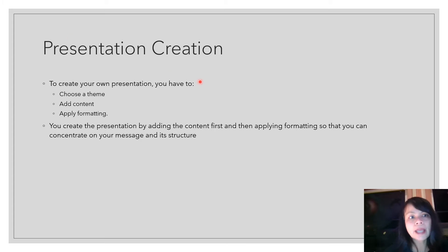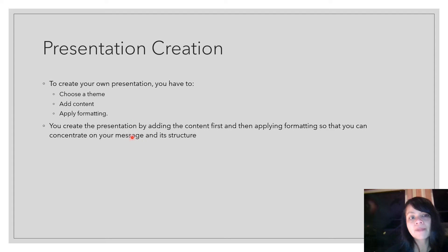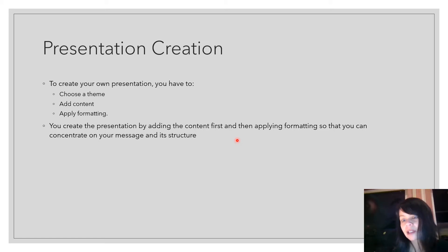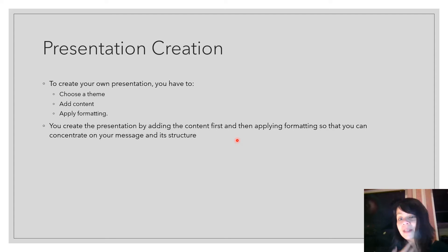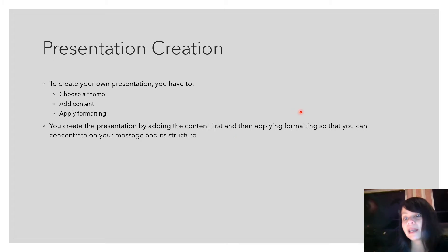To create your own presentation you have to choose a theme, add content, and apply formatting. You can create the presentation by adding content first and then applying formatting, so you can concentrate on your message and structure before getting distracted by design — and you really can spend a lot of time on that, so make sure you have your content in there first.